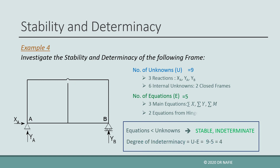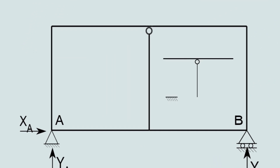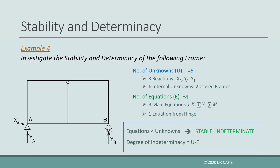As a follow-up, if the hinge at the top is lowered to be below the top frame elements, then the hinge will allow only one independent rotation instead of two, and the number of equations provided by the hinge will be 1. In this case, the frame will still be stable and indeterminate, but the degree of indeterminacy will increase to 5.